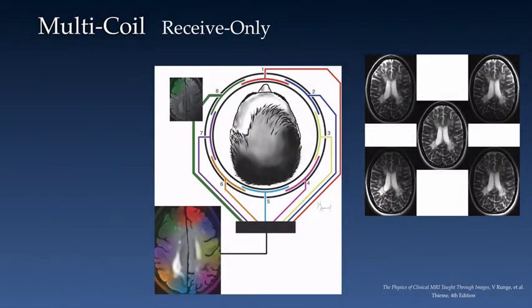The majority of the coils we use today, particularly with high-field cylindrical bore systems, are receive-only coils. This means we are transmitting RF using the integrated body coil, which is quadrature in its design.